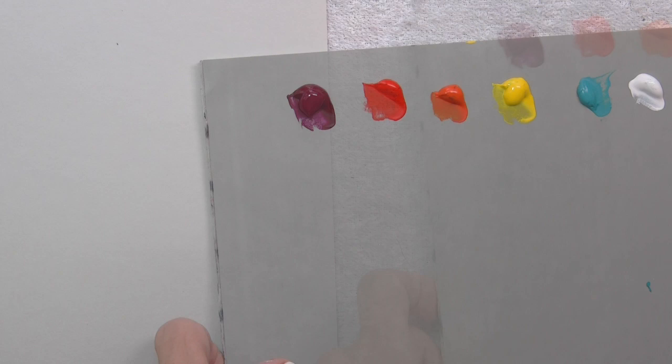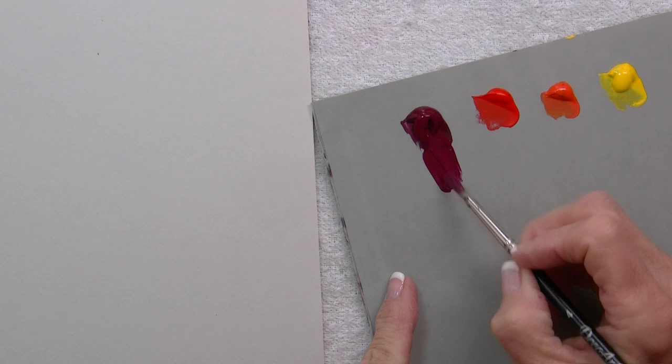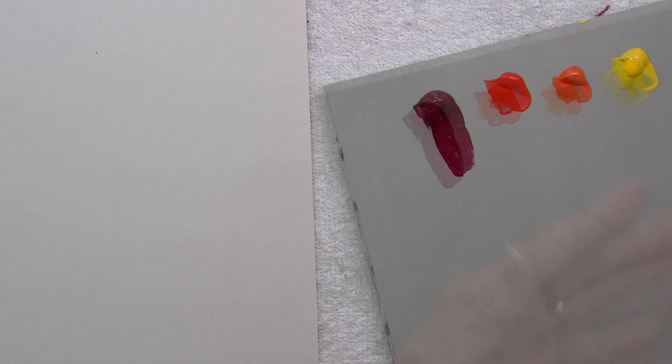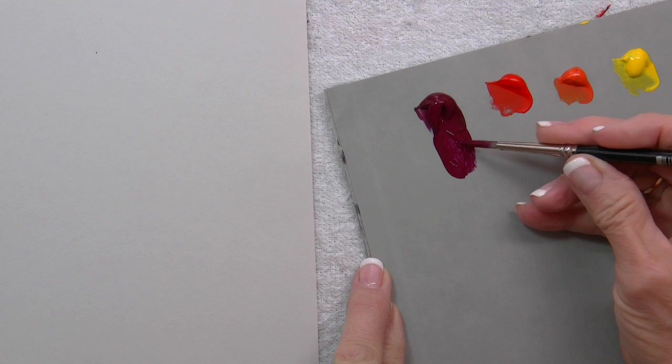When I load my brush, I pull it through. I've dampened my brush and blotted the excess liquid out so I've loaded it well. Then I gently tap it back into a point like that.